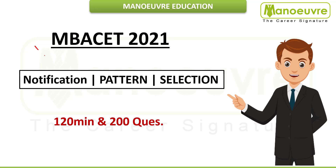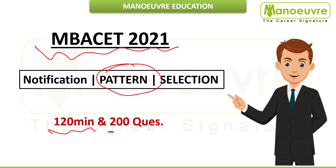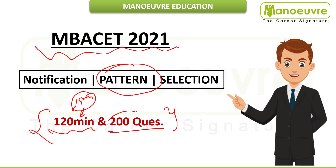Surprising news for MBA CET 2021 — the paper pattern has changed. You have to solve 200 questions in 120 minutes, which is going to be a big task. Earlier it was 150 minutes, but this year they have made it 120 minutes. This is what the circular passed by the CET cell states, and the number of questions will remain the same — 200. The notification and selection process will be declared very soon.